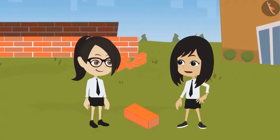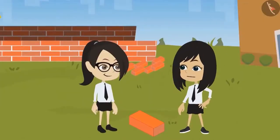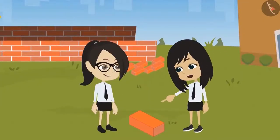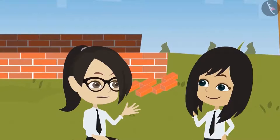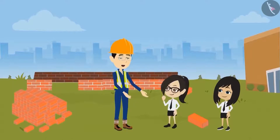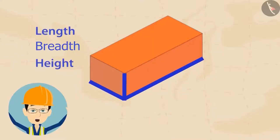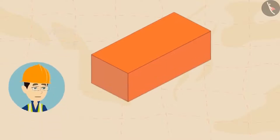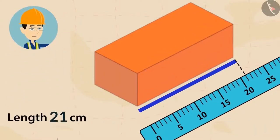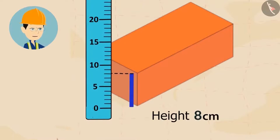There is one point to be noted about the faces and edges. Did you notice all the faces and edges are straight? Yes, you are right. To measure a brick, we measure its length, breadth, and height. The length of this brick is 21 cm, breadth is 10 cm, and height is 8 cm.